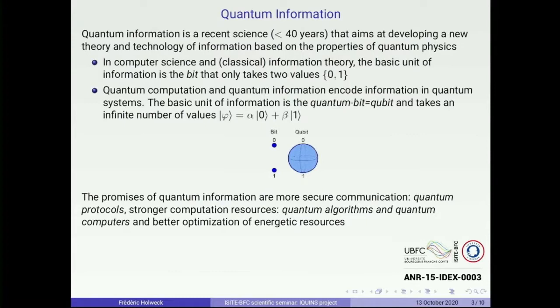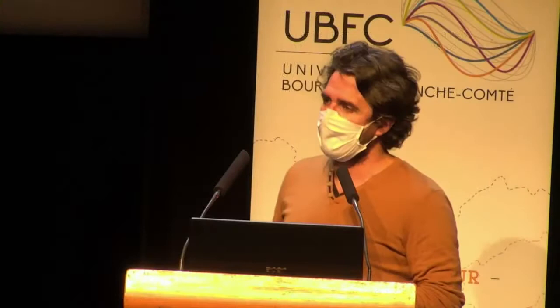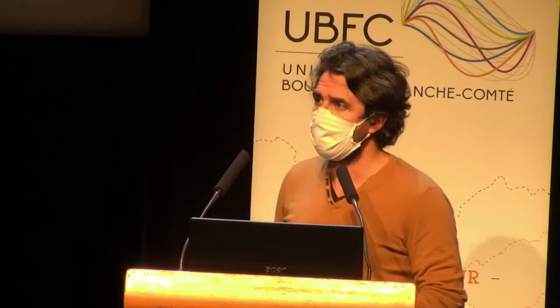A few words about what quantum information is. This is a very short talk so I will take just one slide to give you an idea. Quantum information starts when two of the main scientific revolutions of the 20th century meet: namely quantum mechanics and information theory. The aim of quantum information is to develop new information processing based on the properties of quantum physics, and especially the non-classical properties of quantum physics.